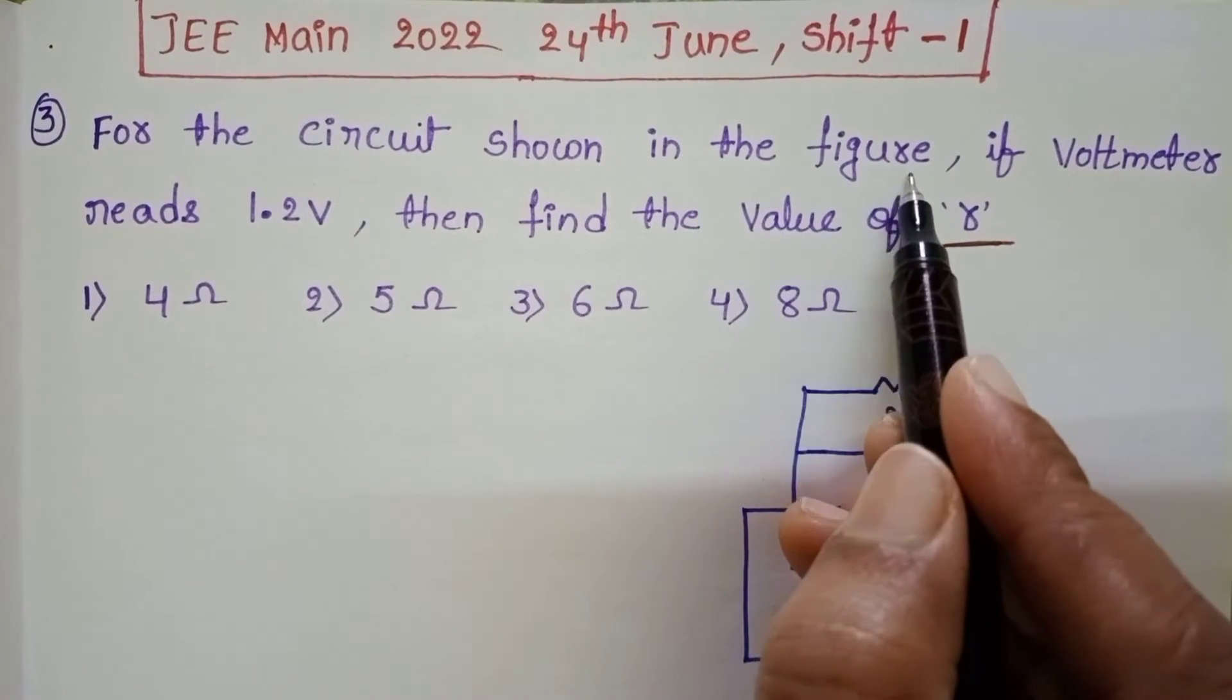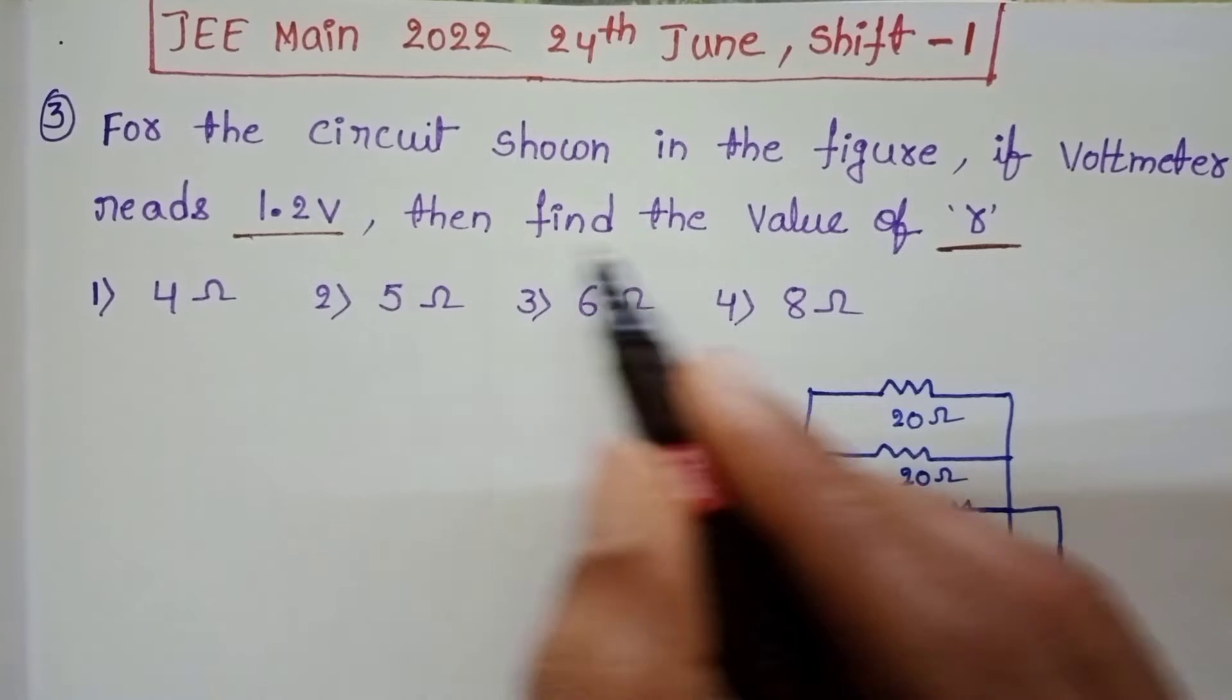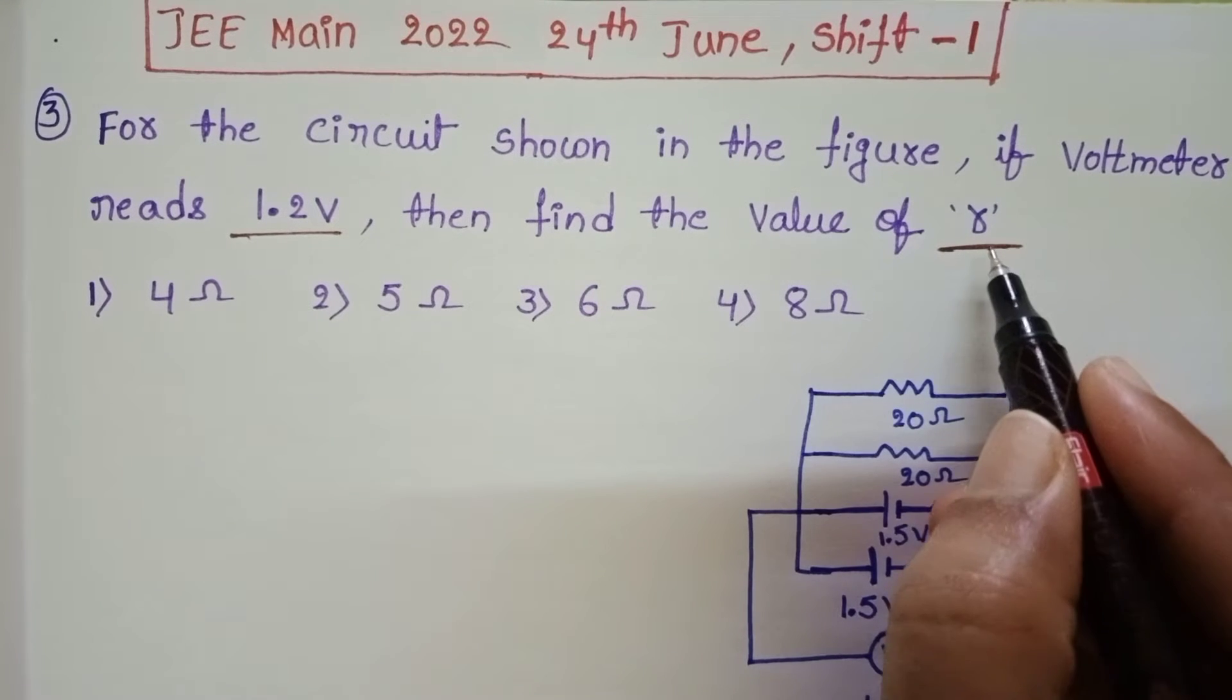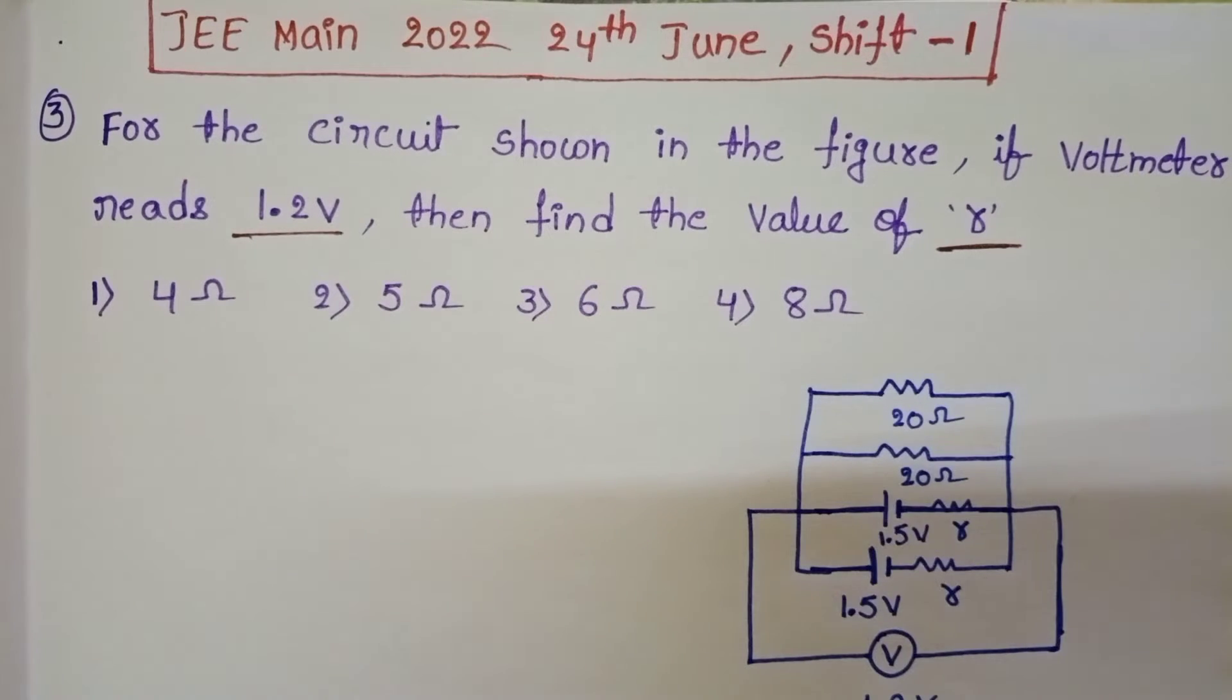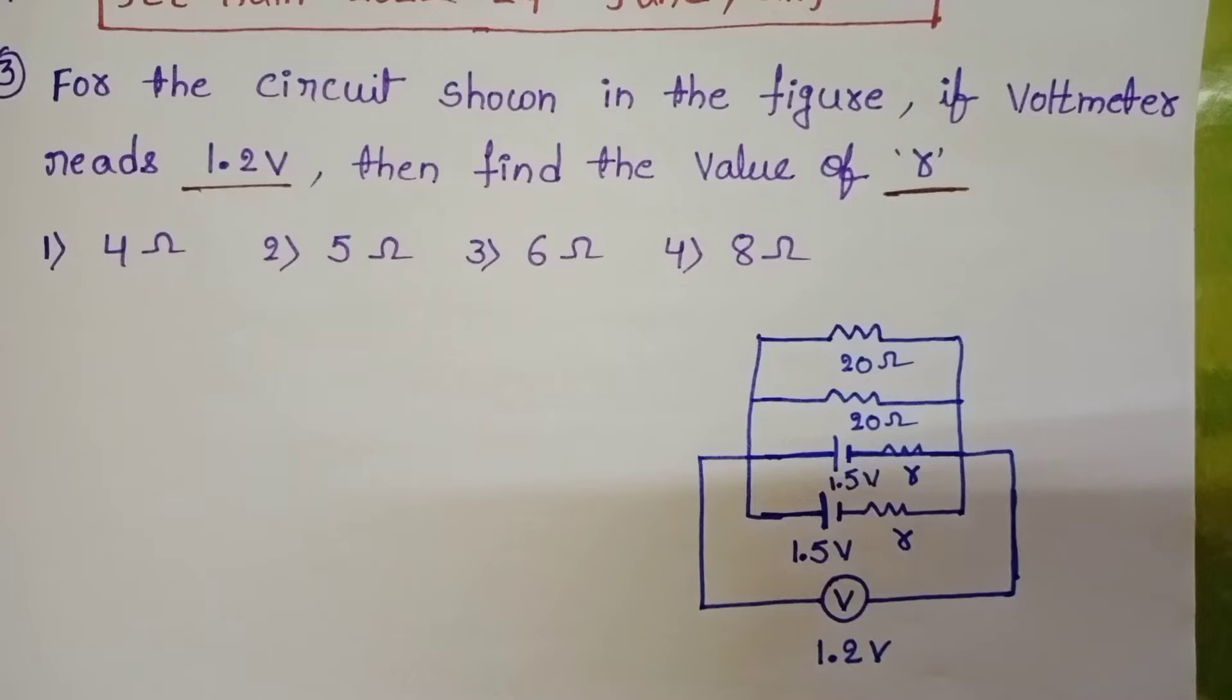For the circuit shown in figure, if voltmeter reads 1.2 volt, then find the value of R. This question is from current electricity. Very direct question. So, once observe the diagram.